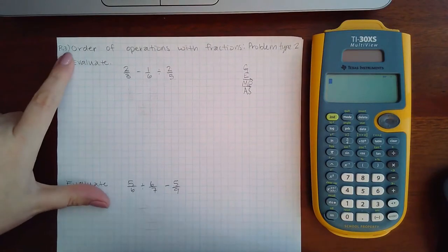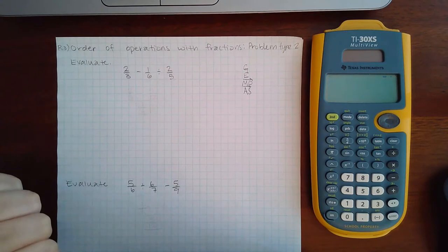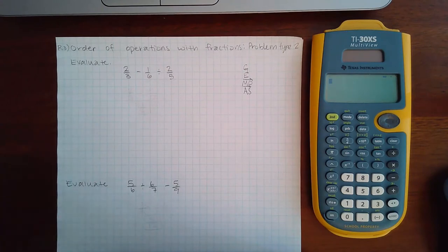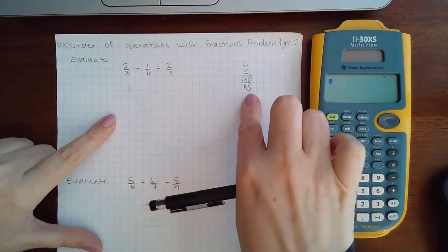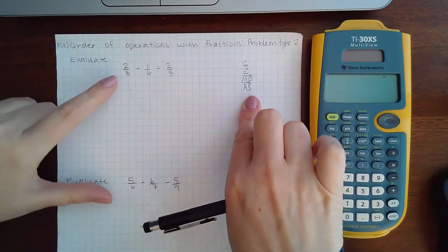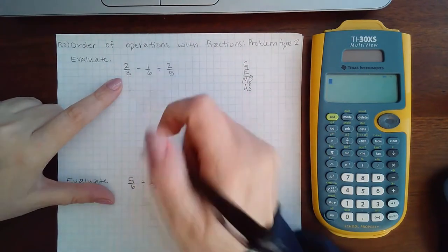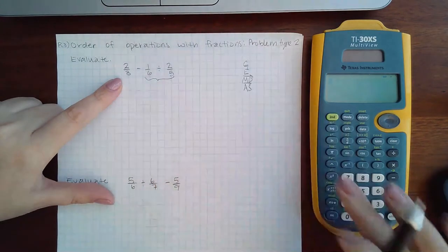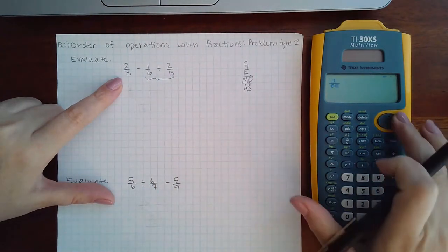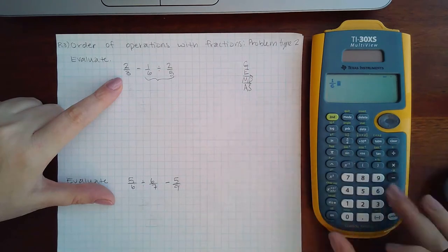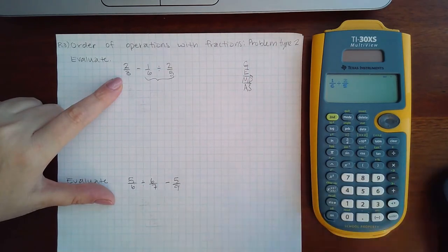Here we have Chapter R, Section 3, Order of Operations with Fractions, Problem Type 2. So we're going to go through the four steps of operations. There are no groups, there is nothing to evaluate, so we're going to jump to multiplying and dividing.